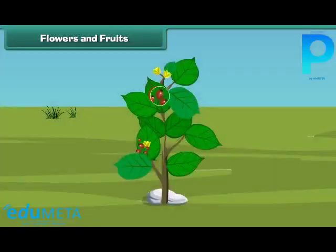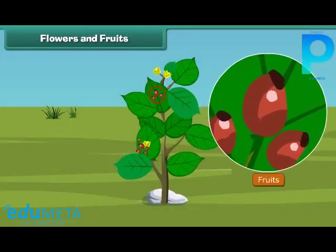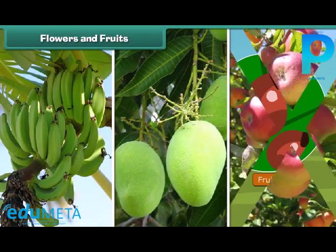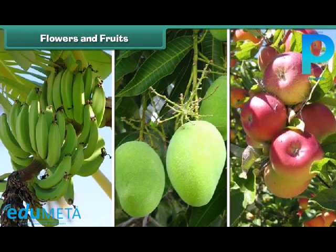I know that most of you also like fruits. Fruit is the juicy part of the plant. Fruits come in different shapes, sizes, and colors like banana, mango, apple, and oranges.